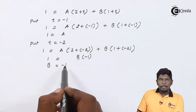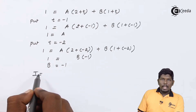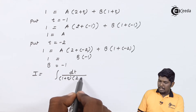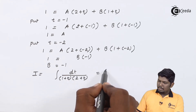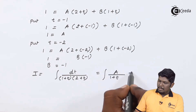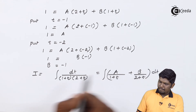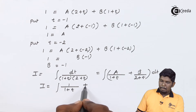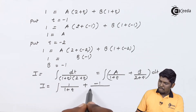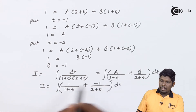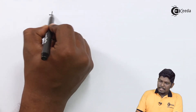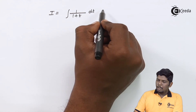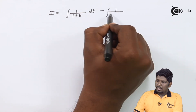Now substituting the values of A and B back into the integral: the integral of dt upon (1 + t)(2 + t) becomes the integral of A/(1 + t) + B/(2 + t) dt, which is the integral of 1/(1 + t) dt minus the integral of 1/(2 + t) dt.